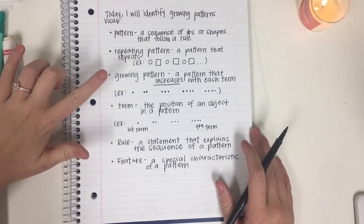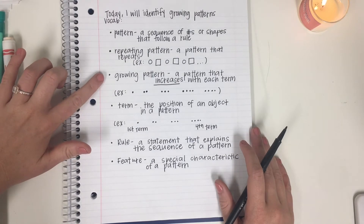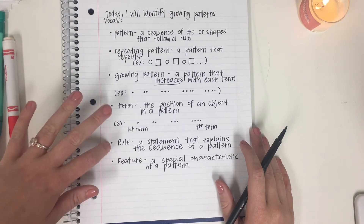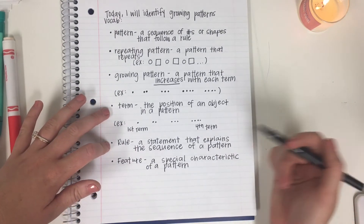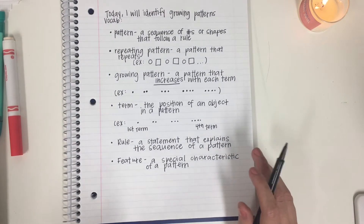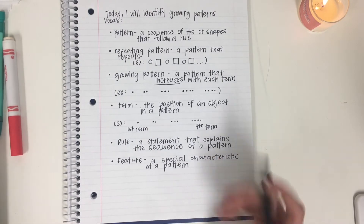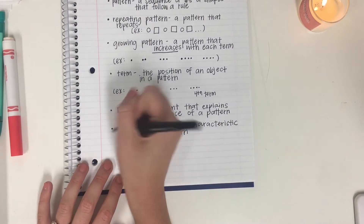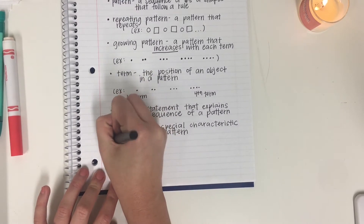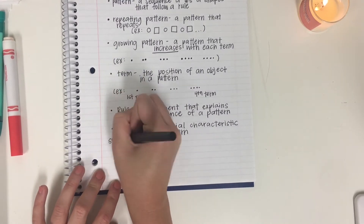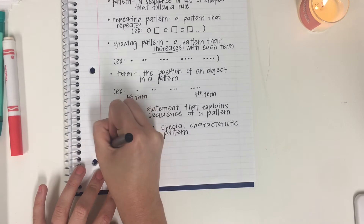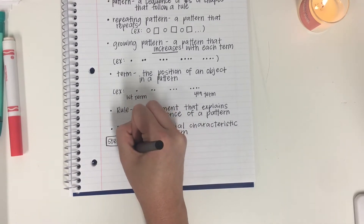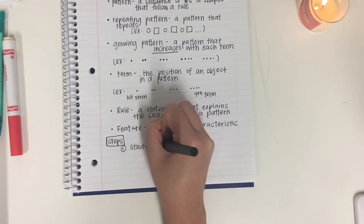We're really going to be looking at growing patterns today — identifying the rule and identifying the next term or what the next pattern would be. Here are some steps we can follow to be successful with these problems. Step one: study the pattern.